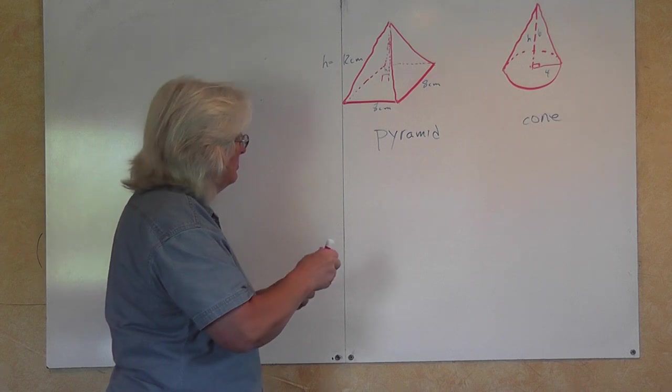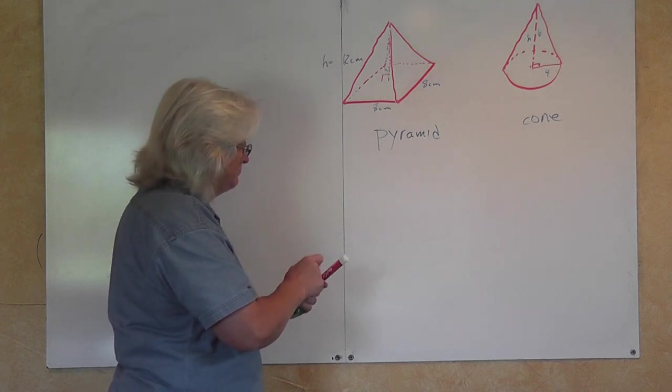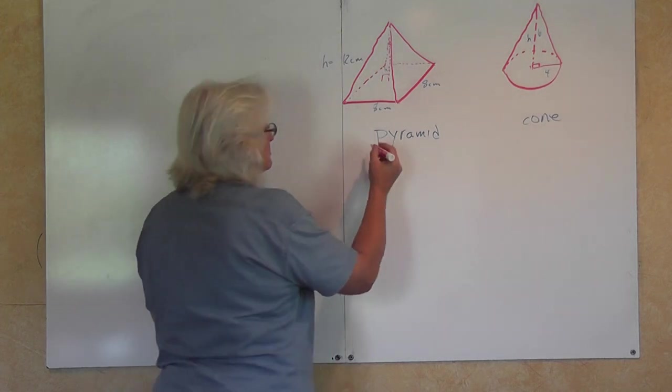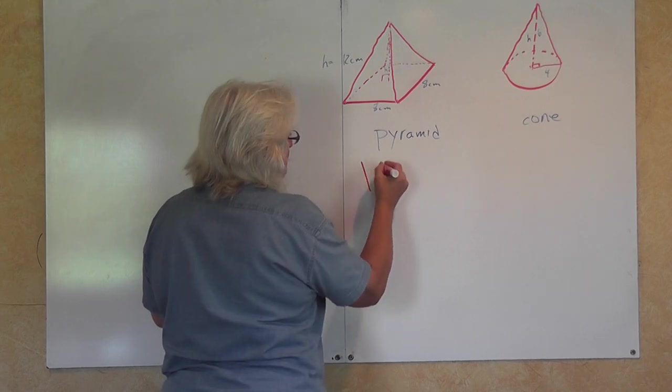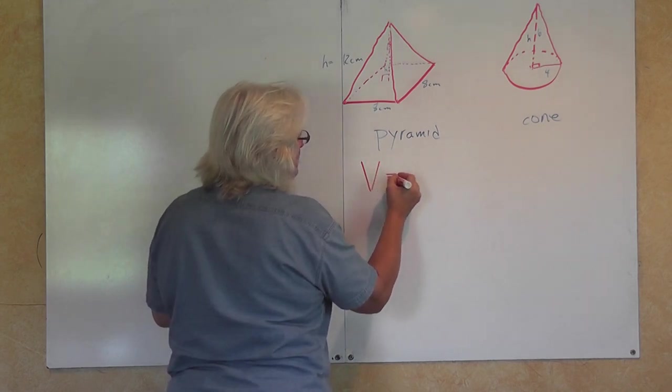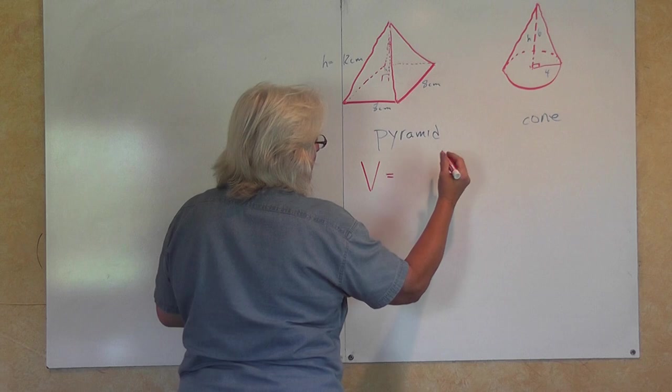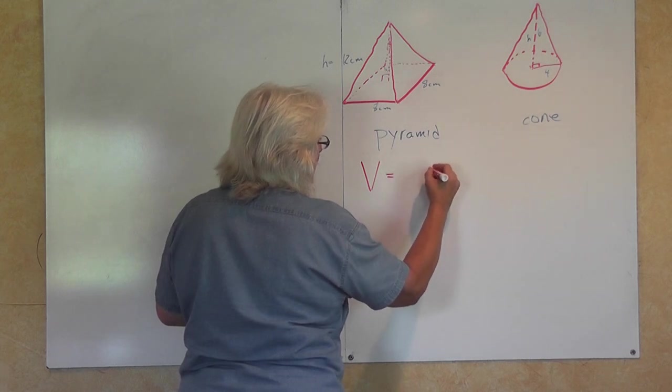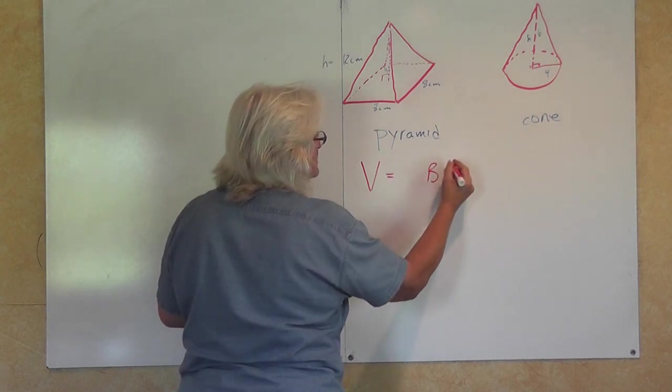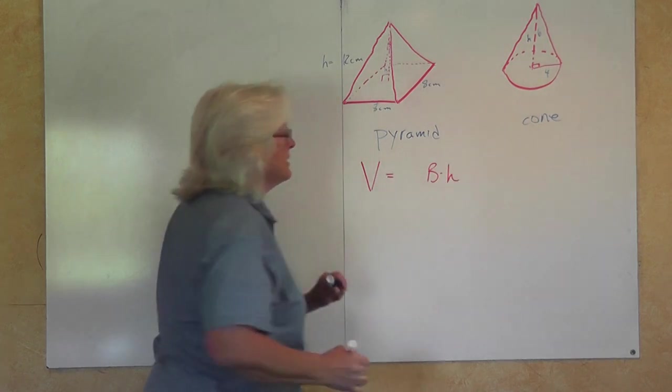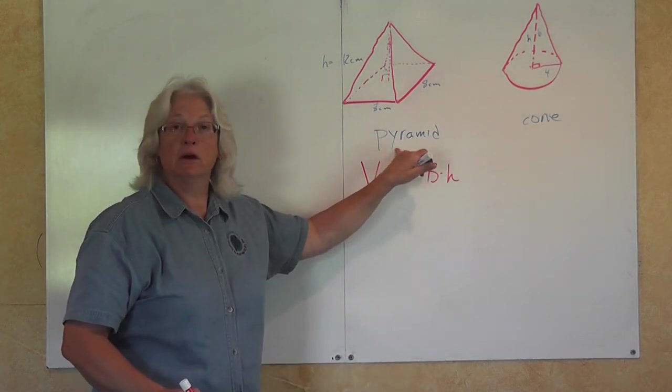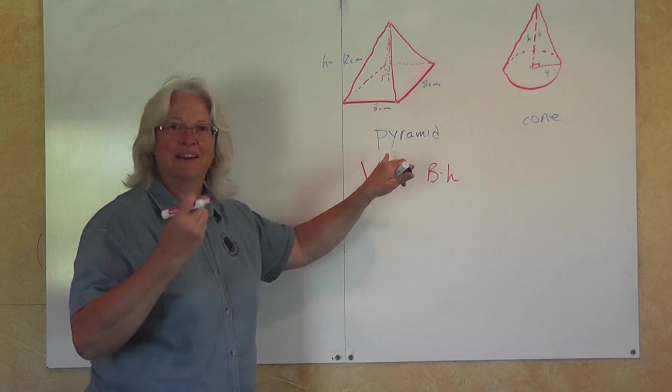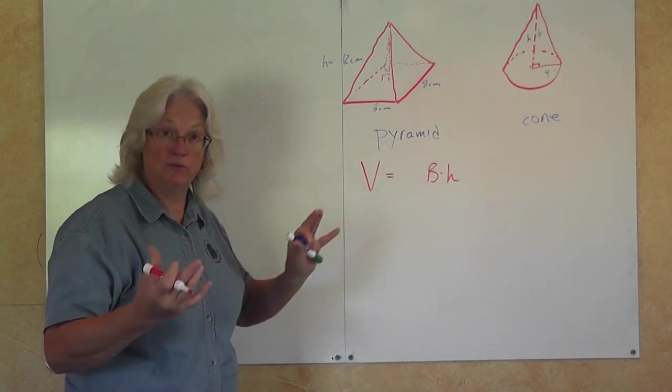So the volume of the prism was the area of the big base, the area of the base times the height. So the area, here all of this area—volume.